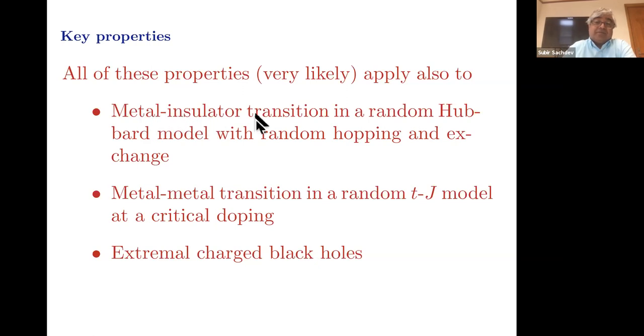Next I'll talk about a metal-insulator transition in a random Hubbard model, which will be at half filling, because you have both an insulating phase and a metal phase. But I'll also mention some recent work on metal to metal transition in a random t-J model, which could be possibly related to phenomena in the cuprates. And hopefully I'll just mention a few words about how all of these properties are also shared by extremely charged black holes at low temperatures.